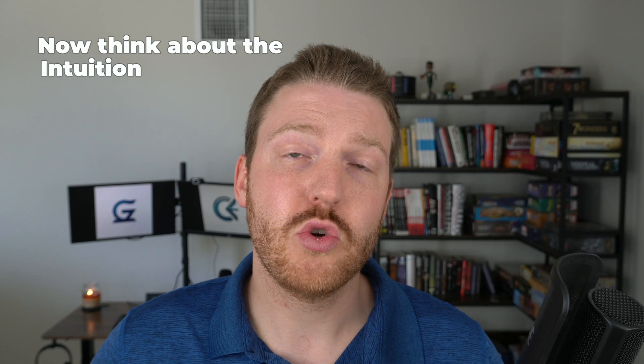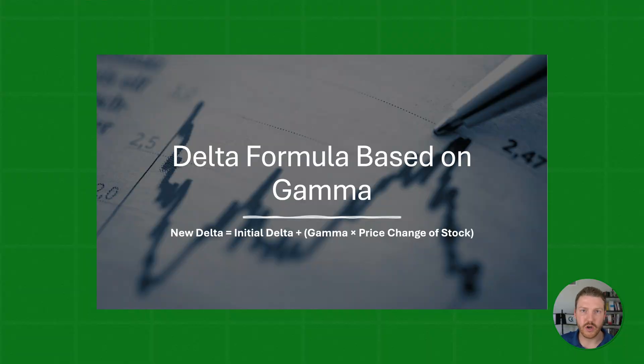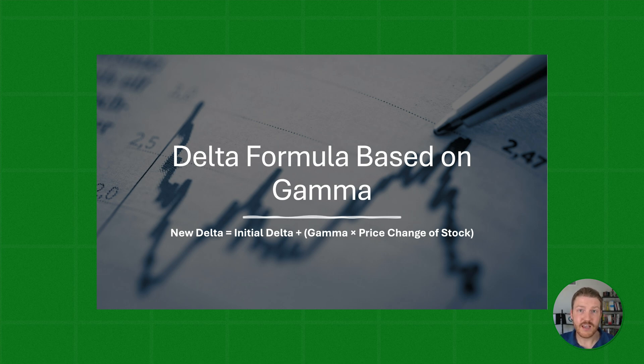Think about the intuition behind this as we reference the formula. When the stock price increases, the delta of both the call option and the put option increases — the call is getting further in the money and the put is getting further out of the money. Whereas if the stock price decreases, there is a further decrease in both the call delta and the put delta, meaning the call option is getting further out of the money and the put option is getting further in the money.